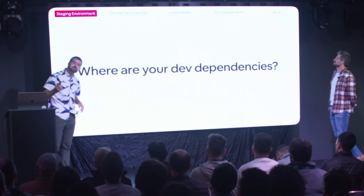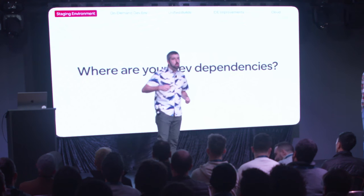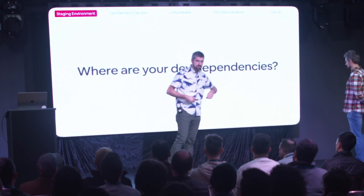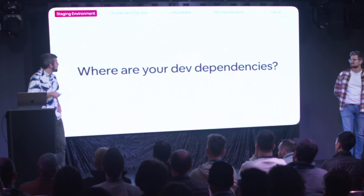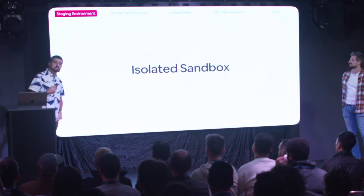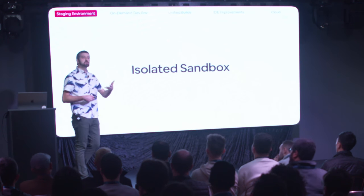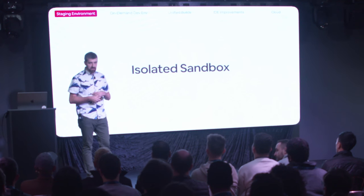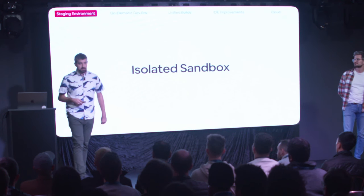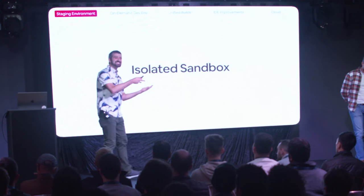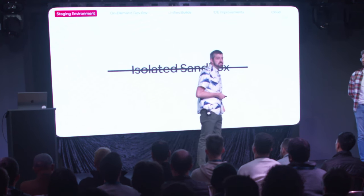When building a dev environment, one of the first questions you need to ask is where are your development dependencies? What service is your dev service going to call out to? What database is it going to connect to? At Airbnb, it feels like we've tried just about all the answers. First we tried an isolated development sandbox — deploying all the transitive dependencies for your service. This works when you have just a couple of services, but you can't have Airbnb in a box when your box is really, really big and you need to give one to every developer. So that doesn't scale.